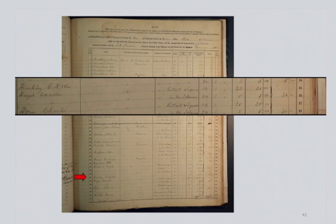And here he is again, in 1871, renewing his license — this time specified as a retail liquor dealer.